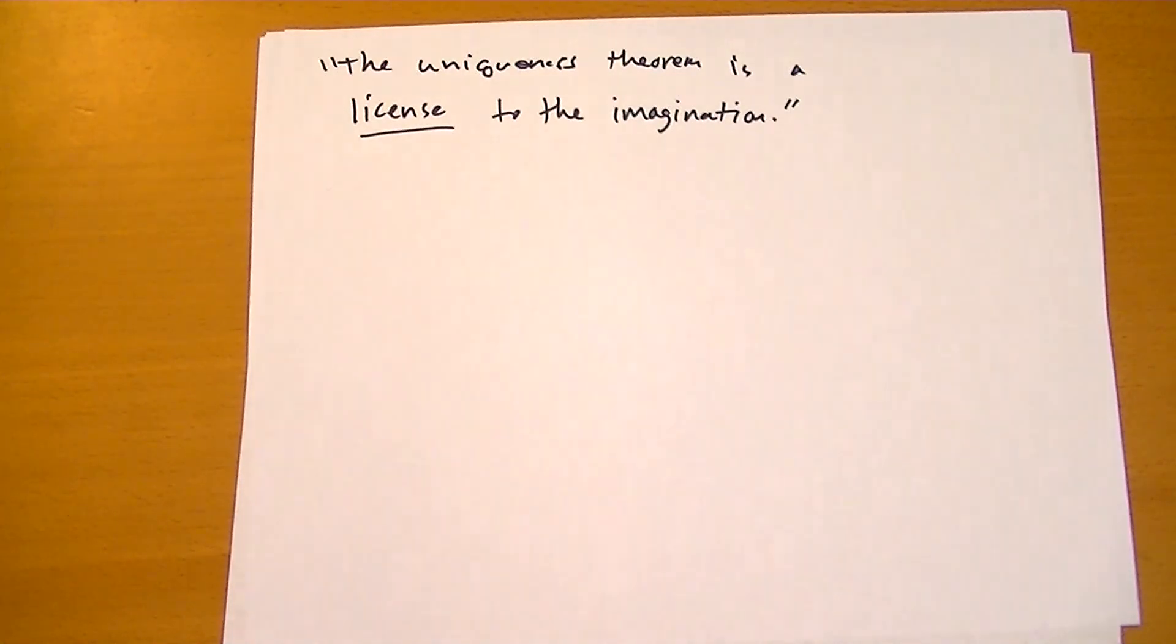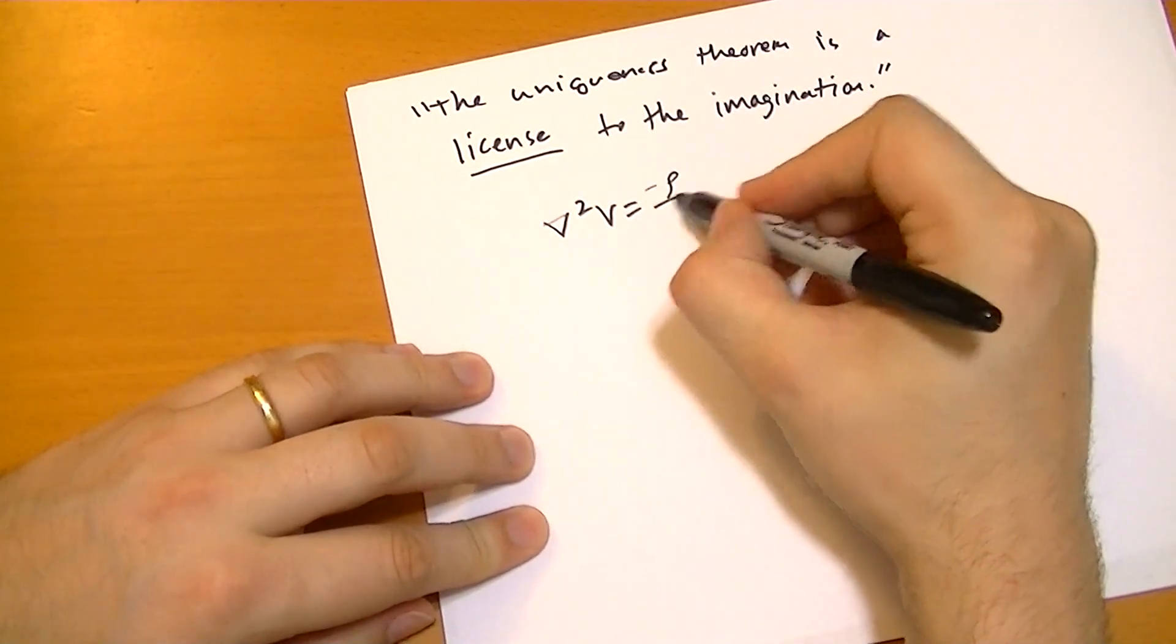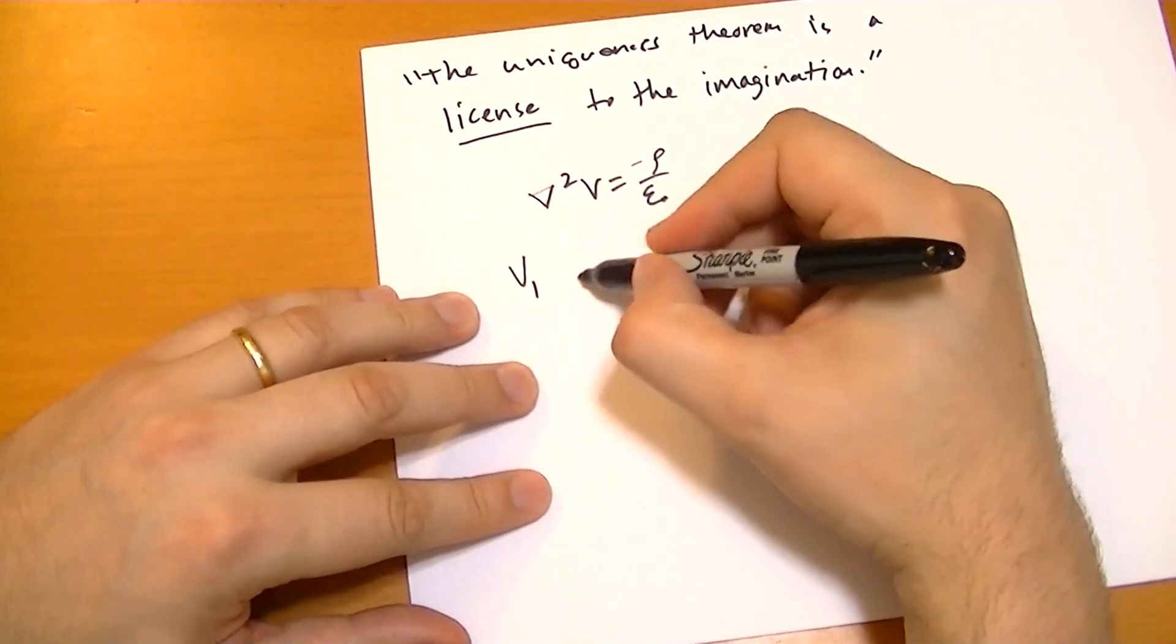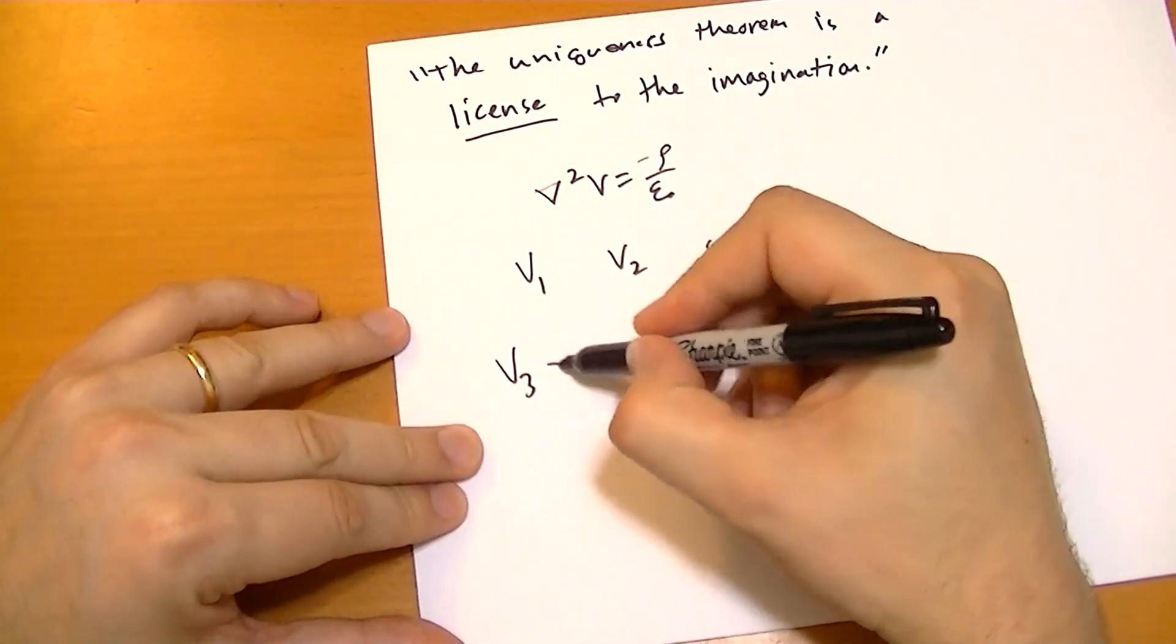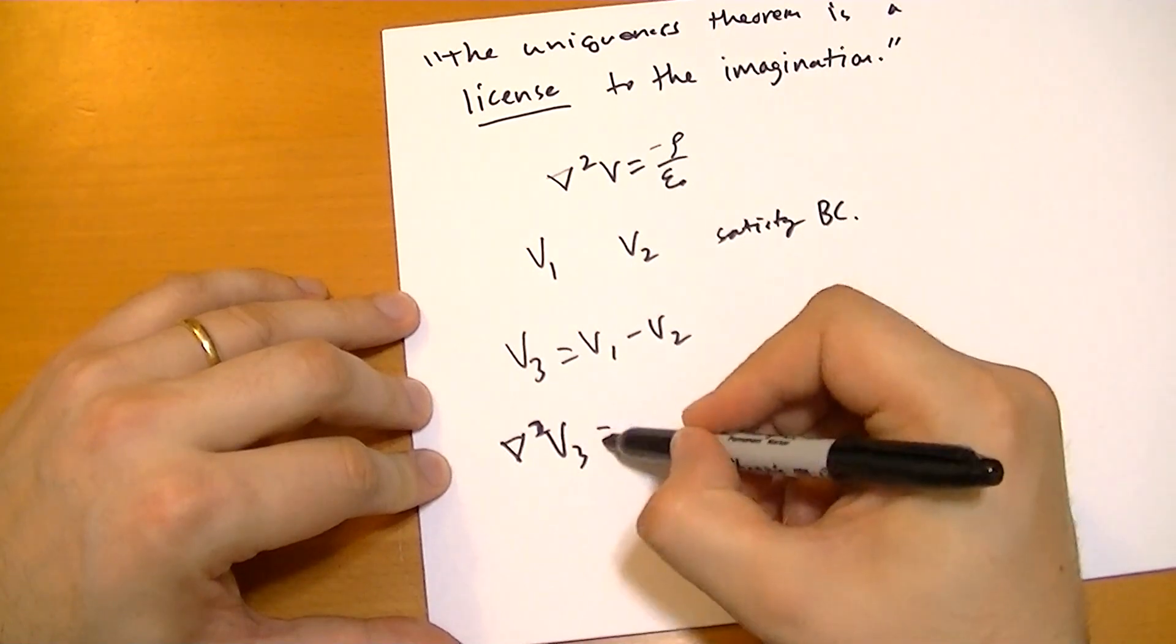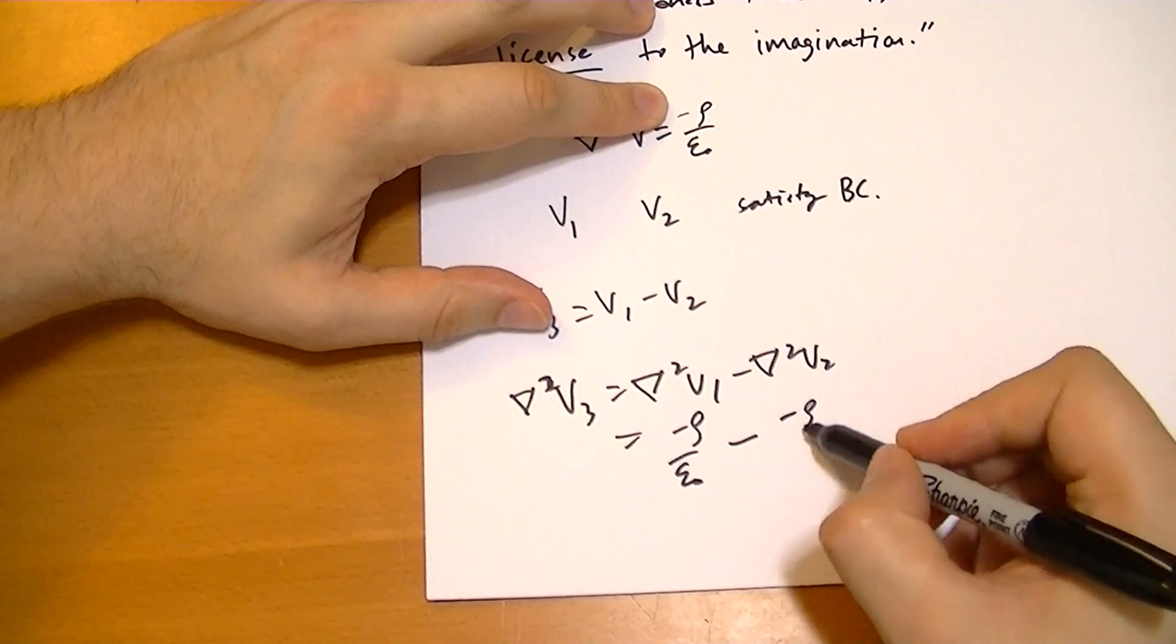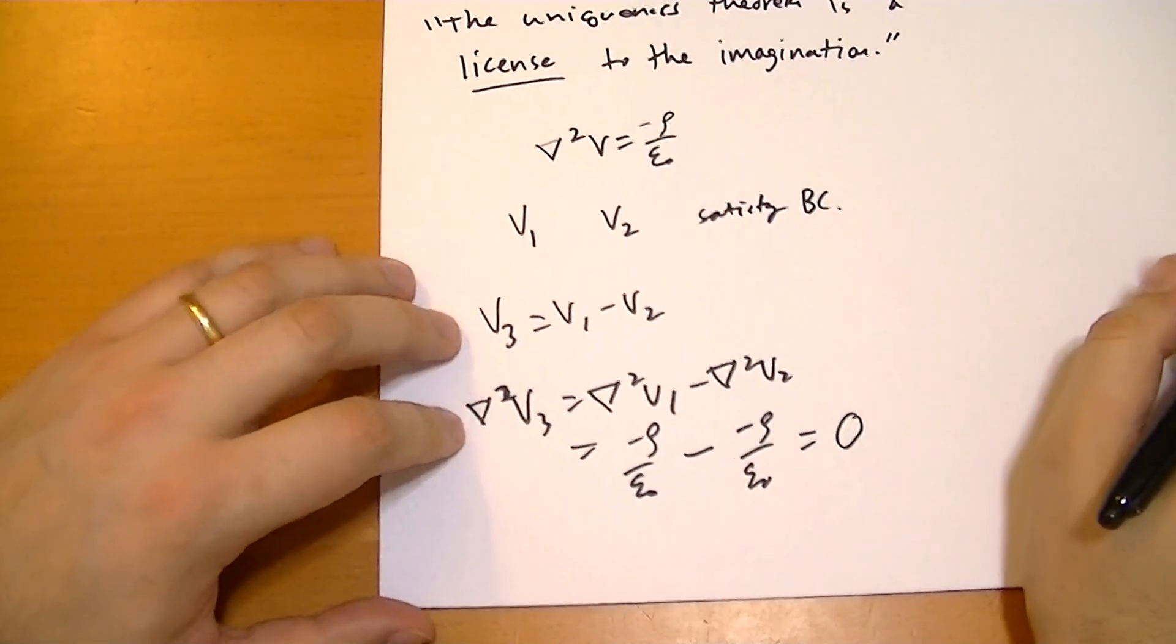An interesting thing to note is that for Poisson's equation where we have Laplacian of V equals minus rho over epsilon_0, so we have some charge inside that region, this same uniqueness theorem works by the same reasoning. Let's suppose we have two solutions, V1 and V2, that satisfy boundary conditions. Then we specify V3 equals V1 minus V2. So Laplacian of V3 equals Laplacian of V1 minus Laplacian of V2. We know that these both have minus rho over epsilon_0, so the Laplacian of V3 is Laplace's equation.